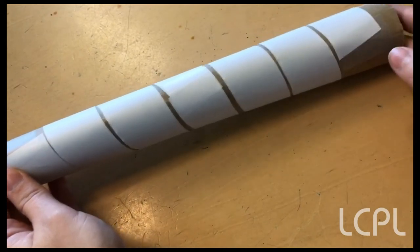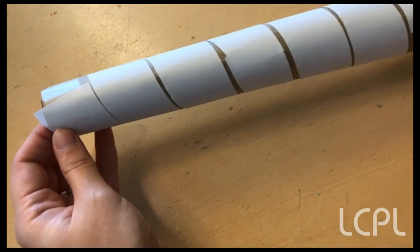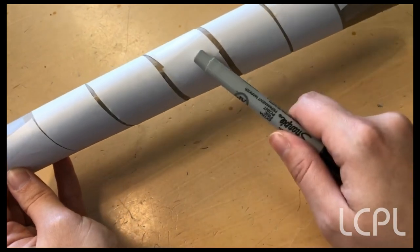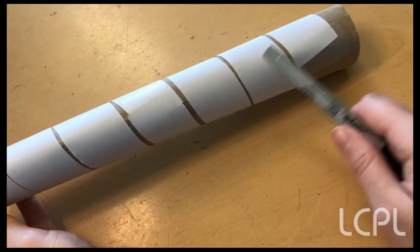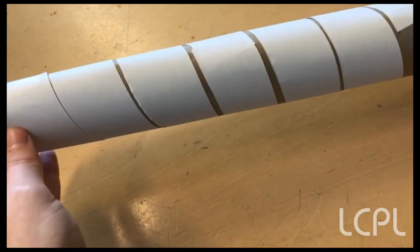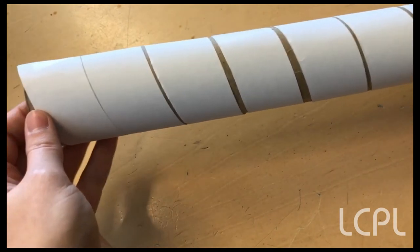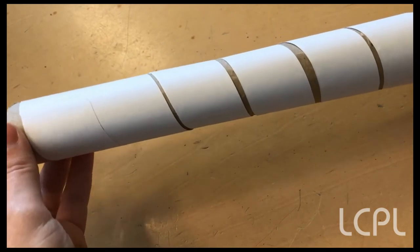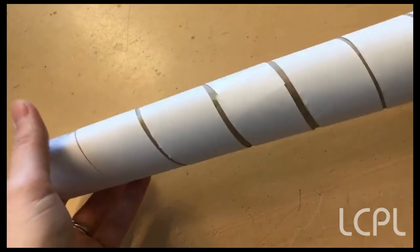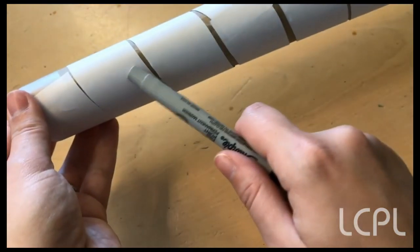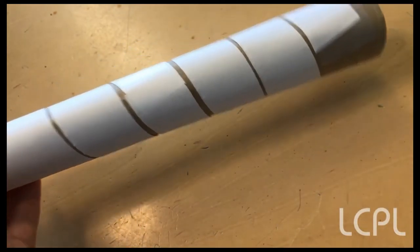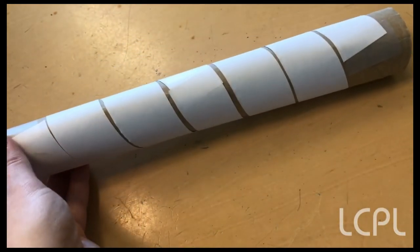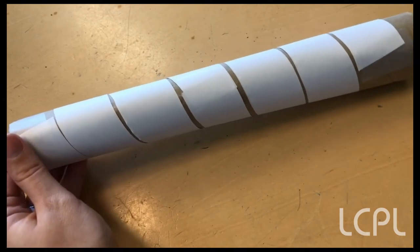So remember that when you are writing your message, one letter goes on each of these sections. And so you can turn your scytale to continue writing your message. Just make sure that there's enough space that you only use one letter in each of these sections. So I'm gonna go ahead and write out my secret message now.